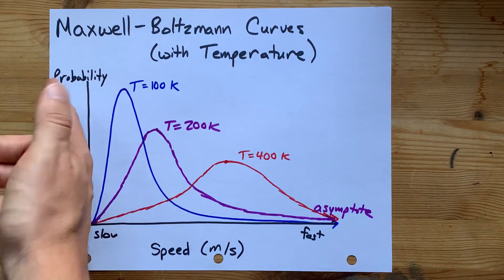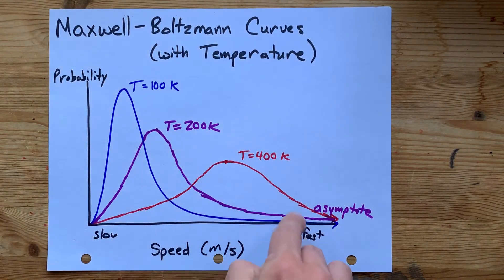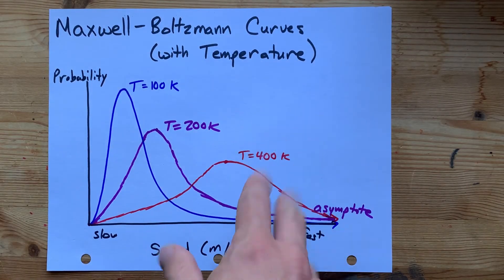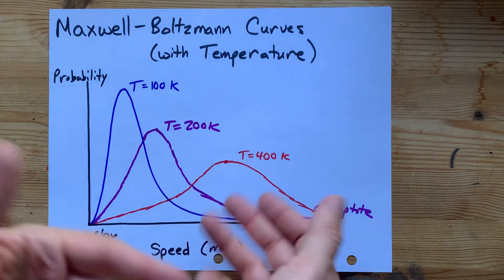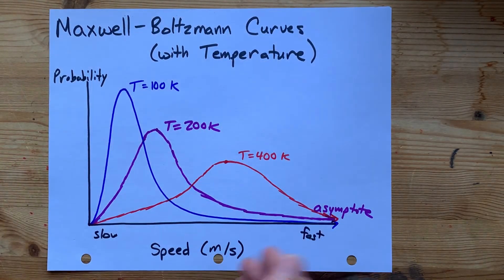And actually, it's a probability density function. So the area underneath each of these curves, if you were to integrate it, is exactly 1. You know, all probabilities add to 1. If the calculus didn't make sense there, don't worry. The point is, here's your Maxwell-Boltzmann distribution.